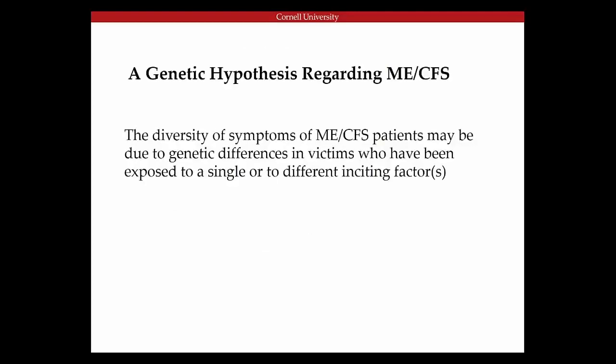To start, I want to put out a genetic hypothesis regarding ME-CFS. That hypothesis is that it's possible that the diversity of symptoms we see in ME-CFS patients may be due to genetic differences in the victims of the disease who have been exposed to a single or perhaps different inciting factors. ME-CFS is often referred to as a diverse disease, but that doesn't mean there's really evidence that it's many diseases. It's still possible there's a single disease, a single fundamental disruption, and it's also possible, despite reports of getting sick after many different possible illnesses, that there's a single factor causing the disease that we don't really understand yet. Especially since diversity in symptoms could potentially be caused by genetic differences.